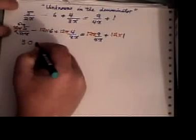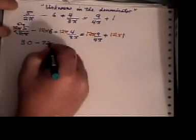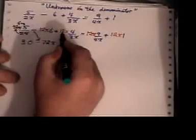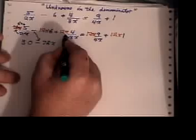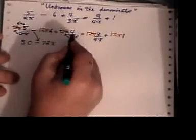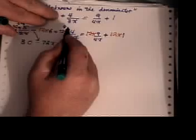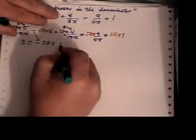12x times 6 is 72x, don't forget that minus sign. Here 12x divided by 3, the x cancels the x, 3 into 12 is 4. 4 times 4 gives me 16.